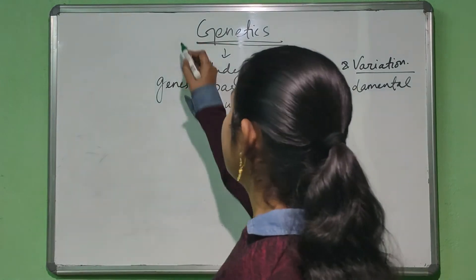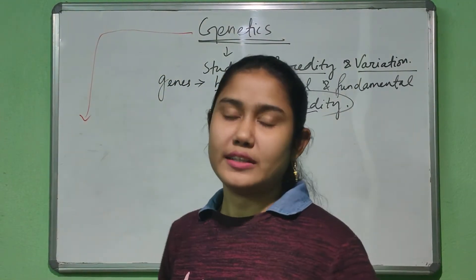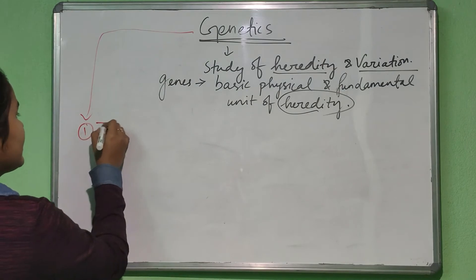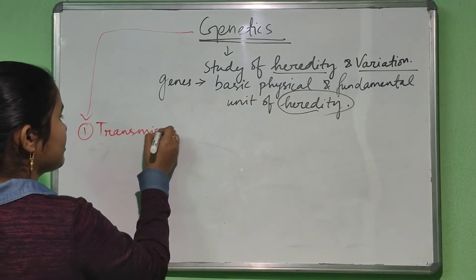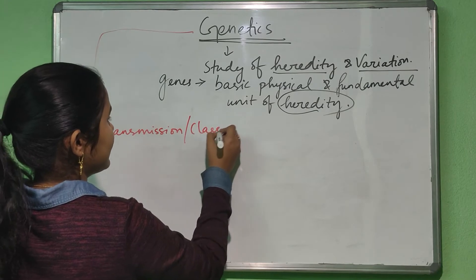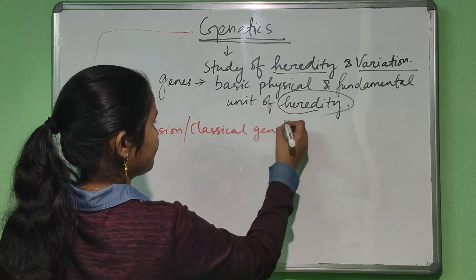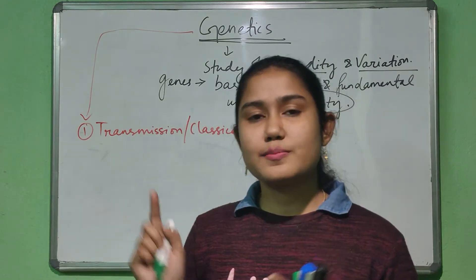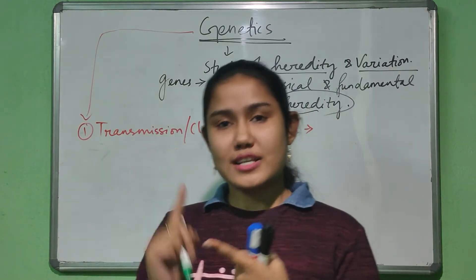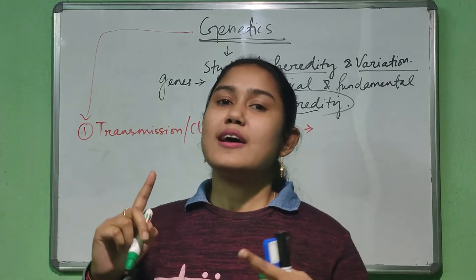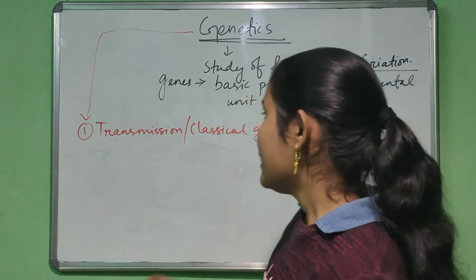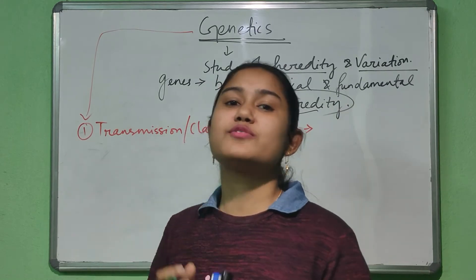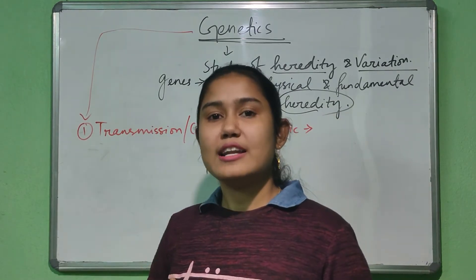We will study this genetics chapter under three criteria. Genetics is divided into three areas. The first one is transmission or classical genetics. In transmission and classical genetics, we will study about Mendel's principle, sex determination, sex linkage and cytogenetics. Transmission or classical genetics is the study of the mode of transmission of genes from one generation to the next generation.